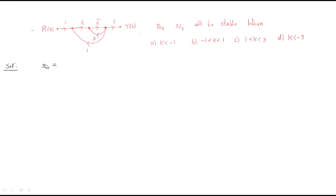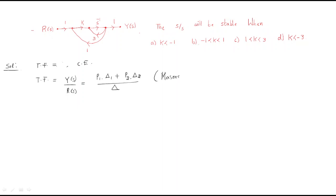To find the characteristic equation, we first find the transfer function. The transfer function formula we use is Mason's gain formula: T(s) = (P₁Δ₁ + P₂Δ₂) / Δ. We already have extensive knowledge of Mason's gain formula from previous problems. First, we find Δ.